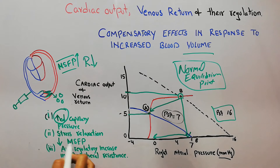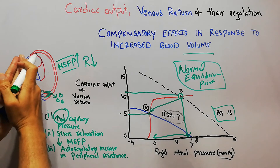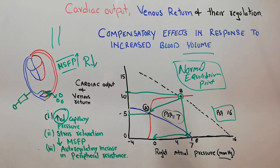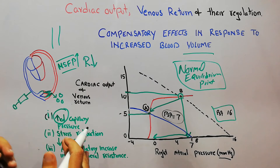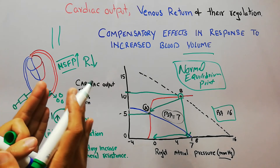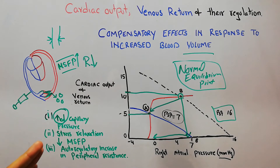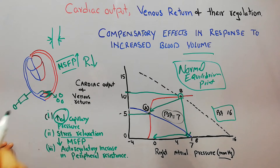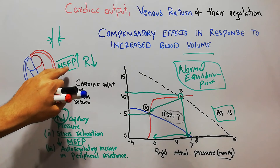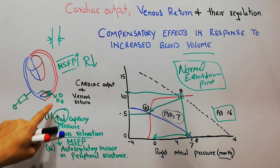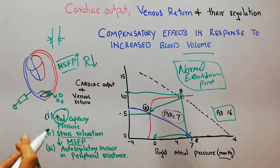The second compensatory effect is stress relaxation of the veins. When more fluid is injected into the body, the veins initially get distended and their resistance initially decreases. But when the blood volume remains high over time, the pressure in the wall of the veins gets distributed and decreases with the passage of time — a process known as stress relaxation. This stress relaxation also brings down and decreases the mean systemic filling pressure.